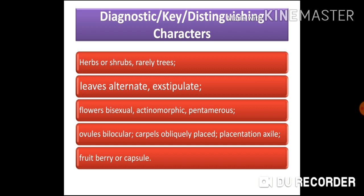The fourth character: ovary is bilocular with carpels obliquely placed, and placentation is axile, meaning ovules arise from the axis of the ovary. The fifth character: fruit type is berry or capsule. Tomato and Withania somnifera bear berry-type fruits, while Datura species bear capsule-type fruits. With these 5 characters in combination, you can identify an unknown specimen as belonging to family Solanaceae.